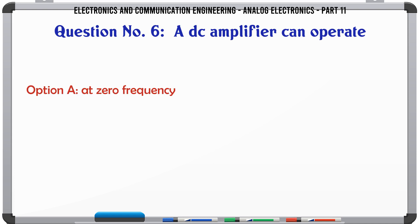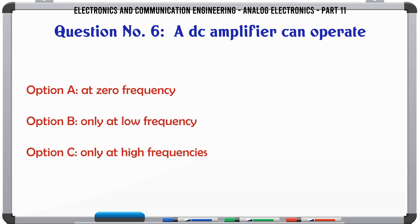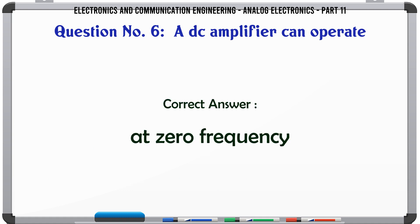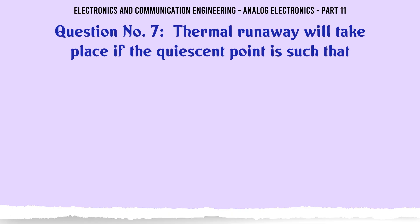A DC amplifier can operate. A. At zero frequency. B. Only at low frequency. C. Only at high frequencies. D. Both at low and high frequencies. The correct answer is: At zero frequency.